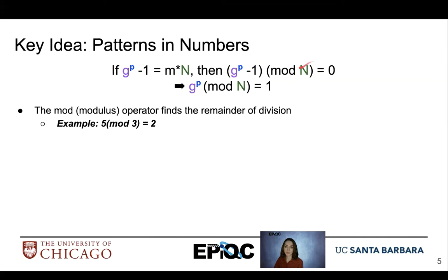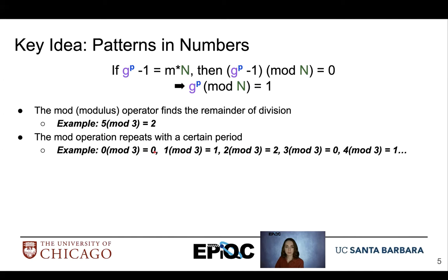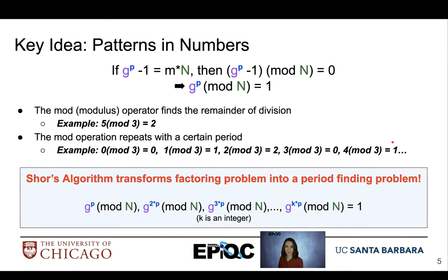Something to point out that's very important is that the modulus operation repeats with some certain frequency with some certain period. So here if we look at 0 mod 3 equals 0, 1 mod 3 equals 1, 2 mod 3 equals 2, 3 mod 3 equals 0, we start to see our values appearing again. So we have zero again and 1 again. Schorr's algorithm takes advantage of this and turns a factoring problem into a period finding problem.